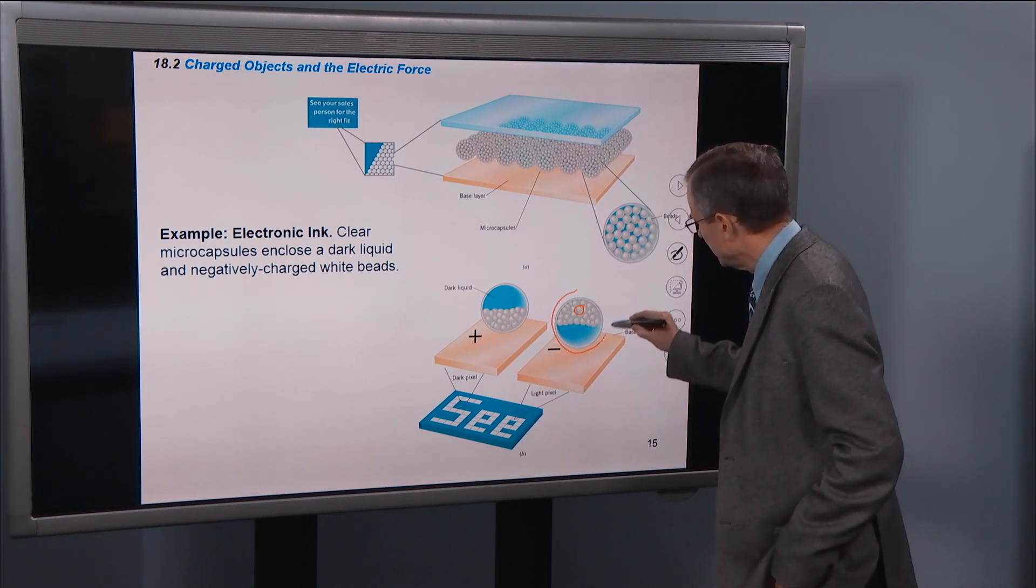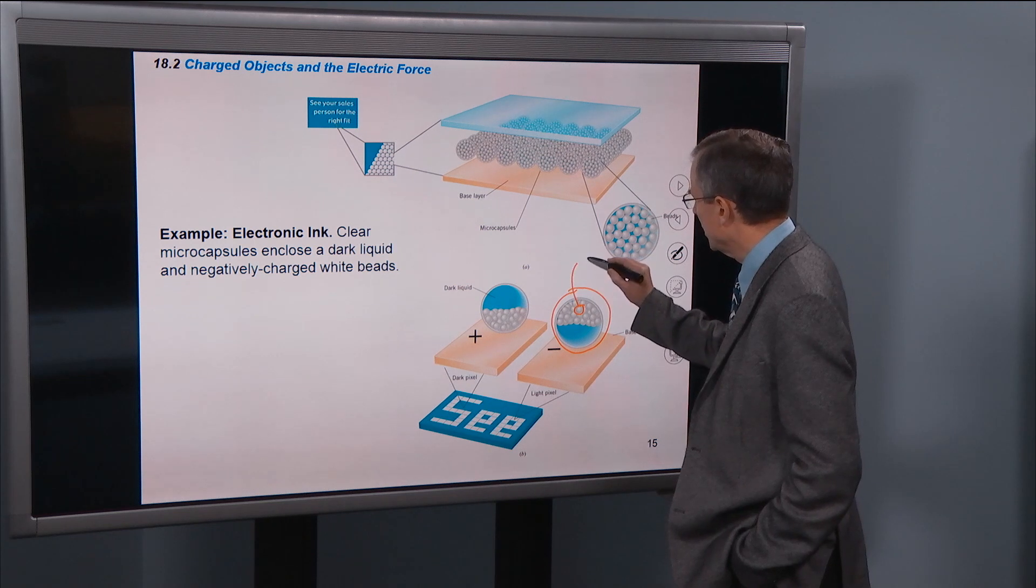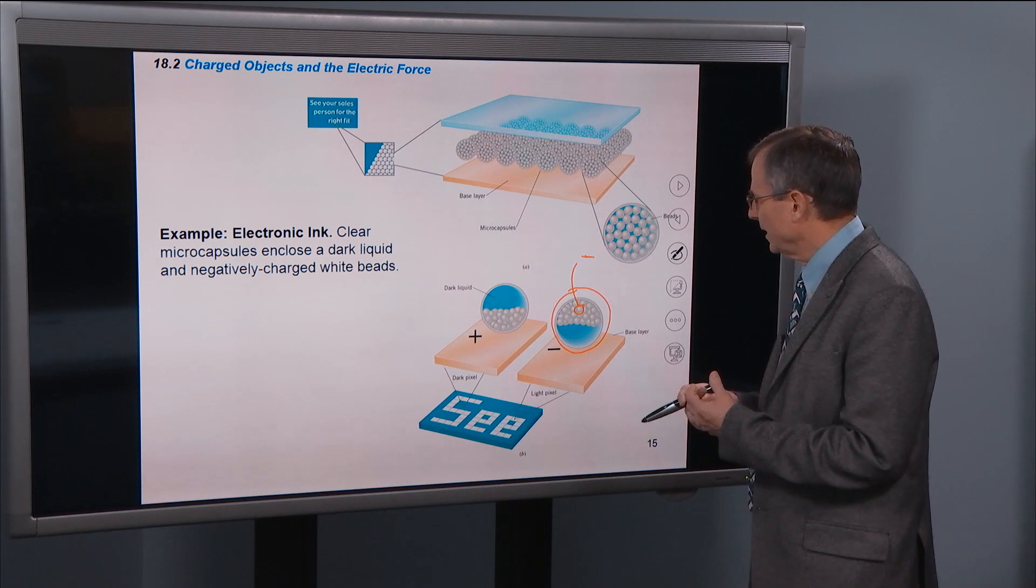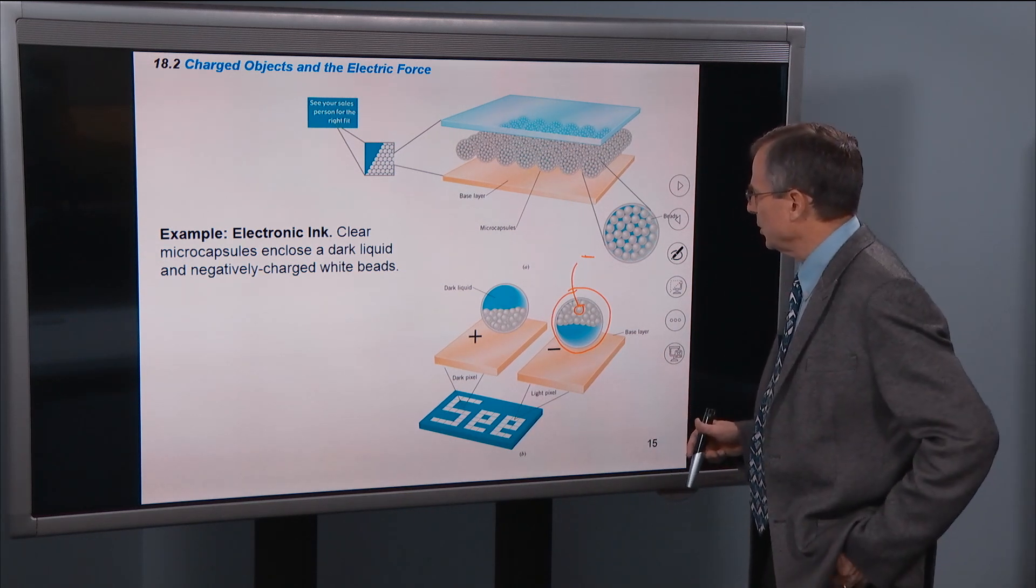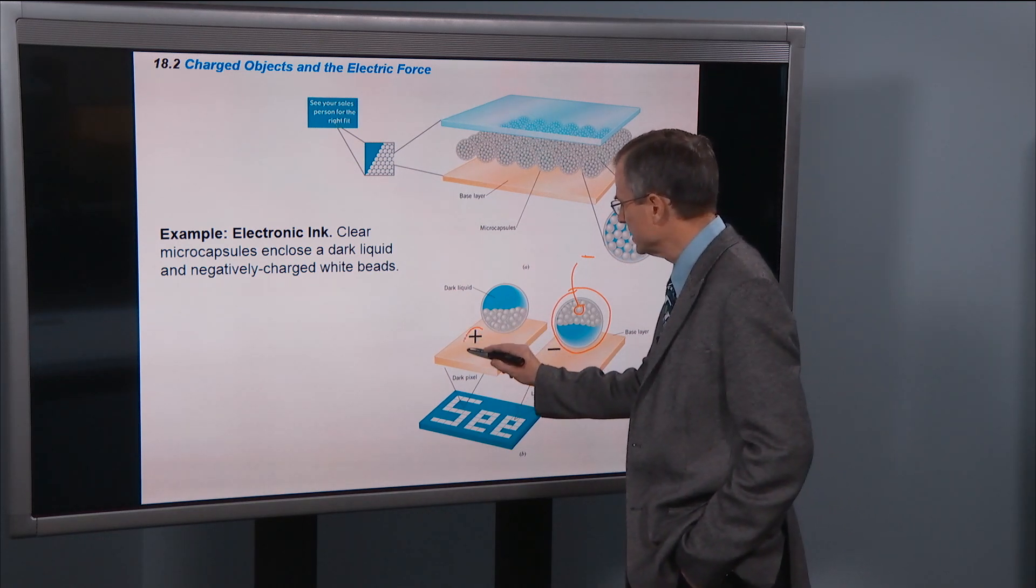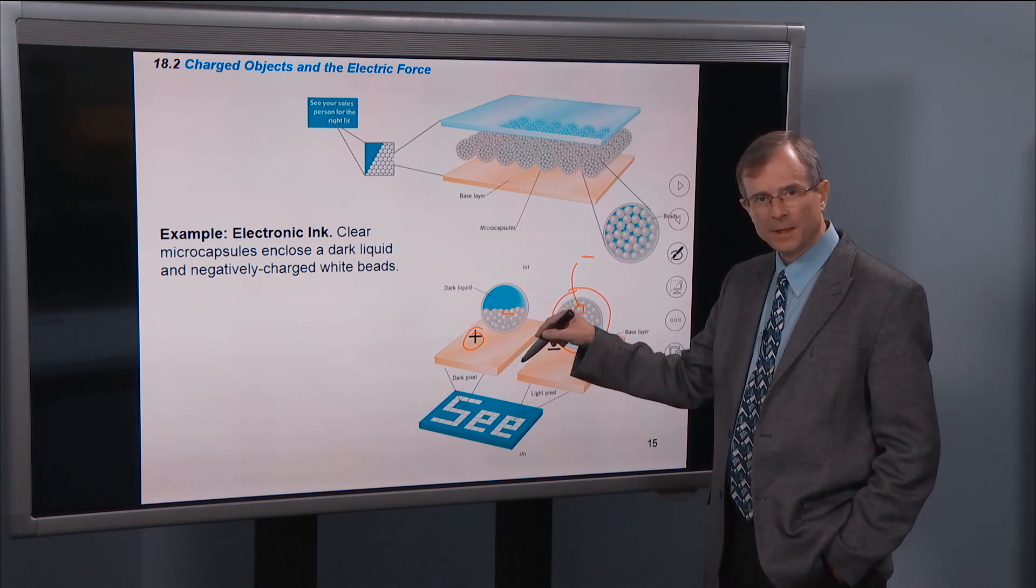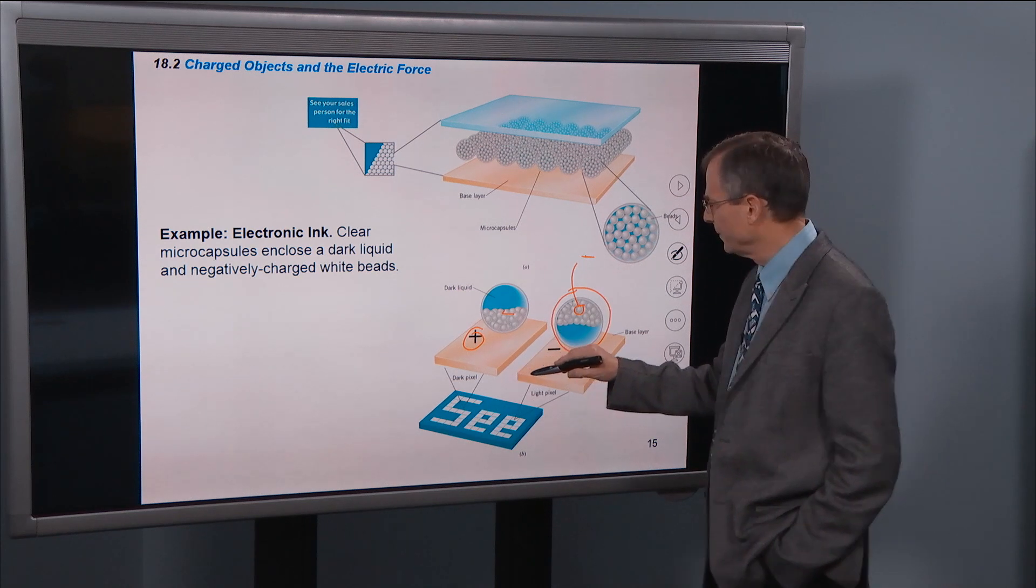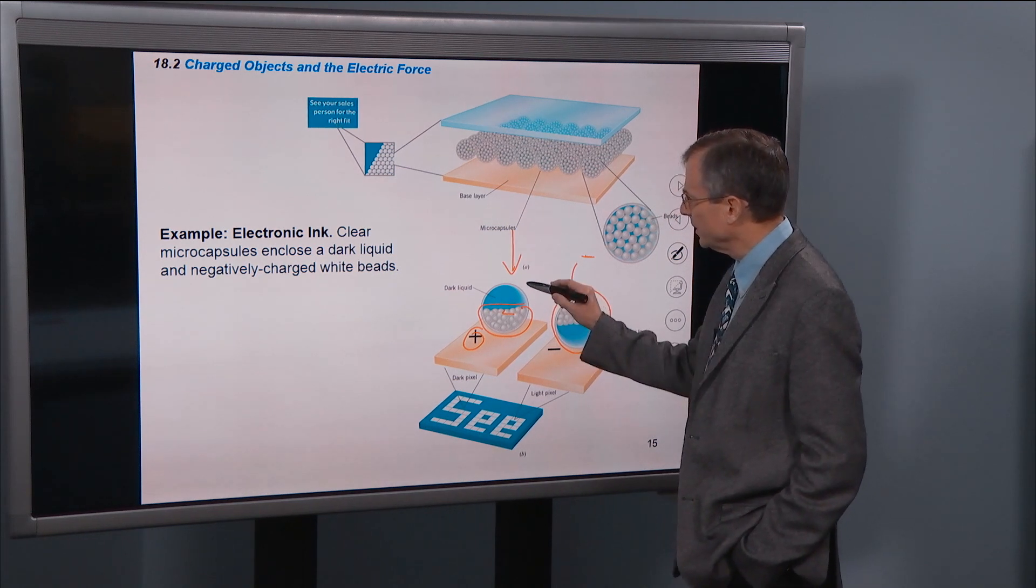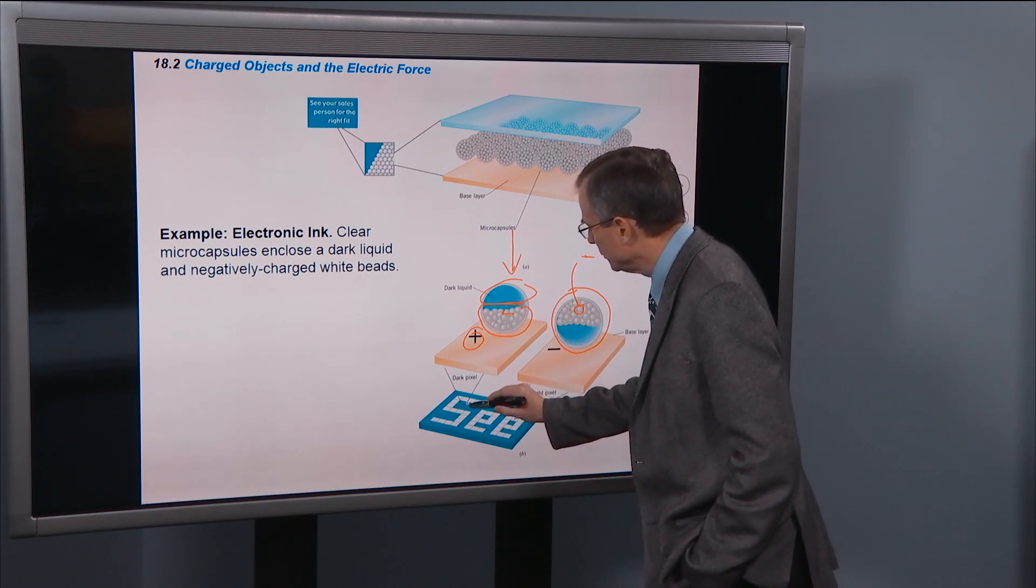this is a microcapsule and inside of it are charged white beads. And these are negatively charged. So those negatively charged white beads get attracted to positive. So if the pixel on the screen that you're interested in is charged positively, then those negatively charged white beads get attracted to that positive pixel. And so all these beads are down below, and when you look at it from above, you're going to see this blue liquid. So that will be the dark pixel, and it will show up as blue.